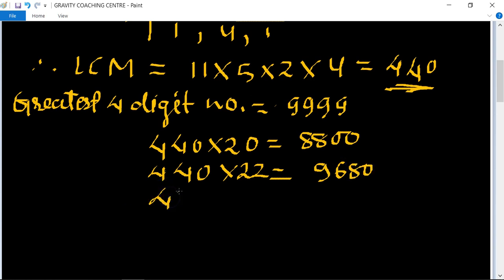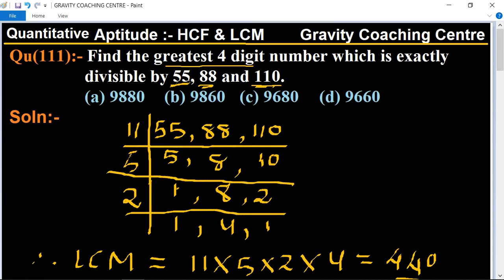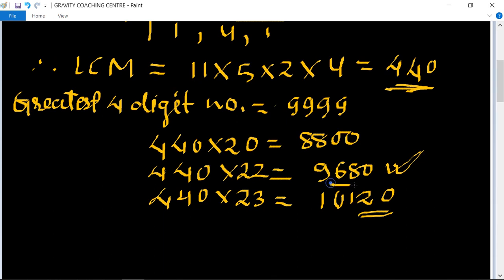And again multiply by 23, so its product equals 10120. So this number is a five digit number, so the largest four digit number which is divisible by these numbers equals 9680. So our required answer is 9680.